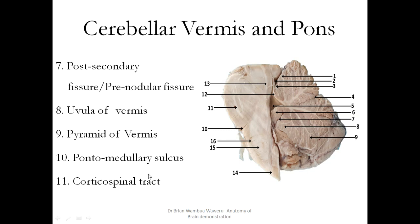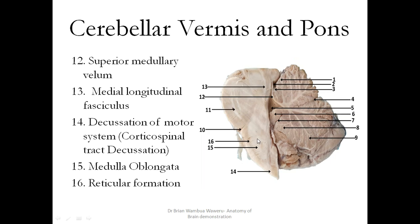Level 11 shows white fibers — these are the corticospinal tracts that come to the pyramids. Level 12 is the superior medullary velum. Level 13 is the medial longitudinal fasciculus. Level 14 is the area of decussation of the motor system — the corticospinal tract decussation. This is the medulla oblongata — the pyramids of the medulla oblongata. Level 16 is the reticular formation, the gray matter here.